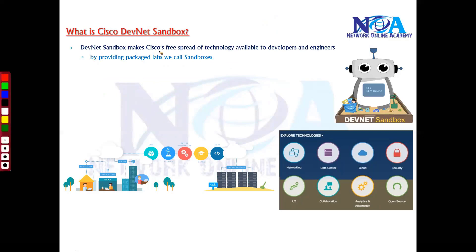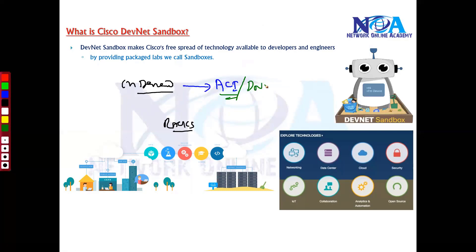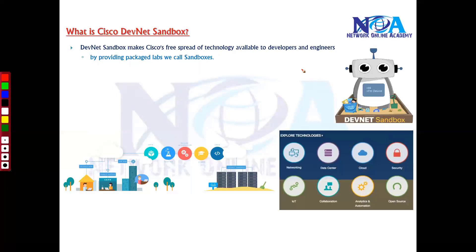The Cisco DevNet Sandbox provides on-demand access — like remote access racks — for different Cisco technology products. If you're doing data center automation, you can access Cisco ACI. If you want to access Cisco DNA, you can use that. For cloud, virtualization, or security, you can simulate or automate with a Firepower device. You can also integrate third-party solutions and development tools, all free of cost.